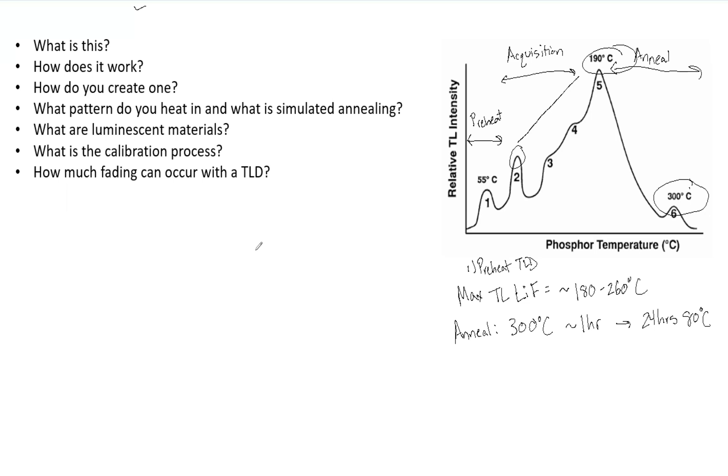What are luminescent materials? What are some characteristics? There is a difference between luminescence and fluorescence. Instant emission of light is fluorescence. If energy is required, then it's phosphorescence, which is what we use.